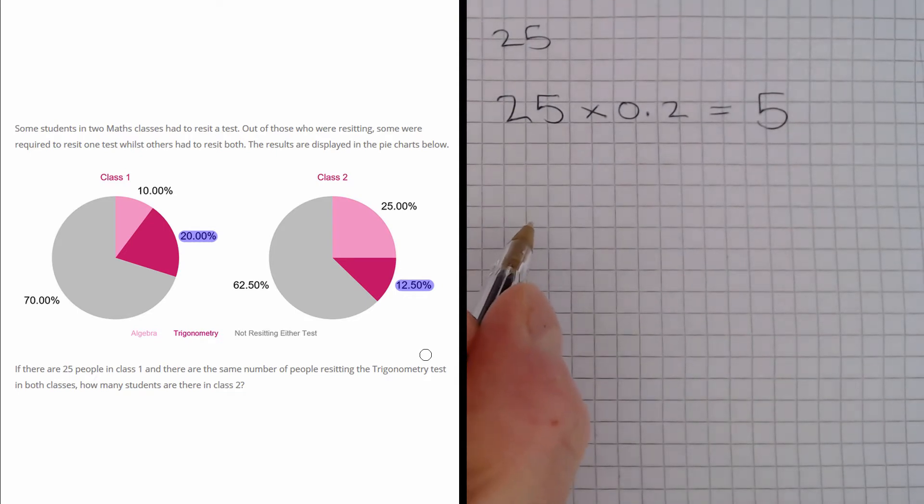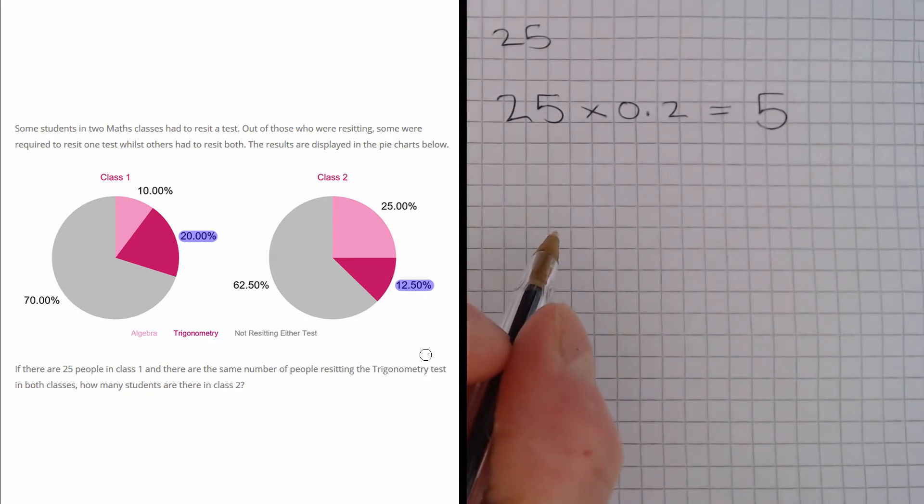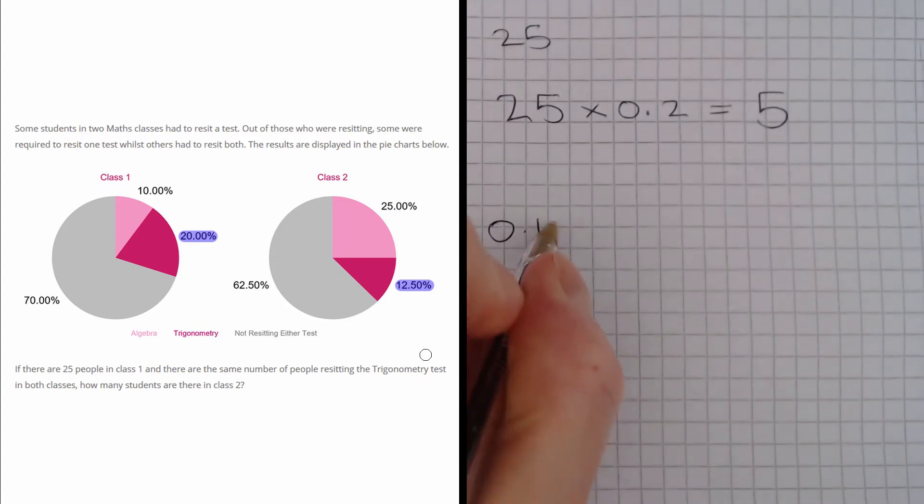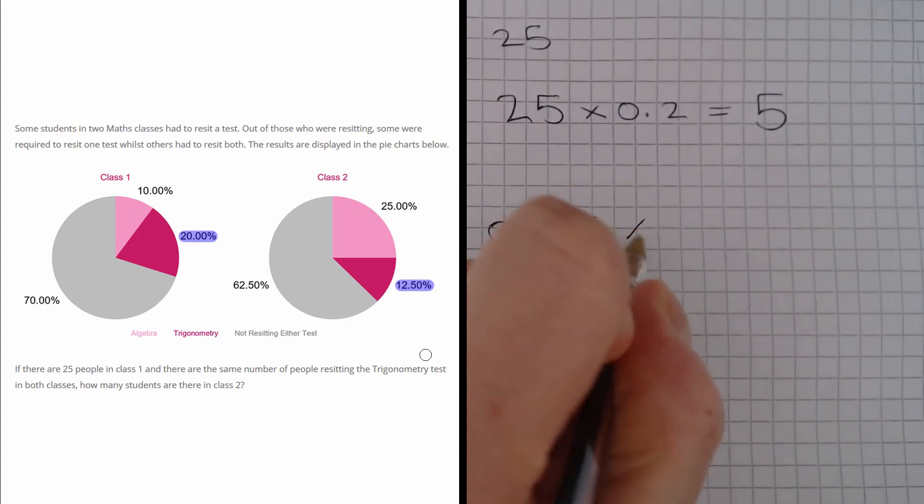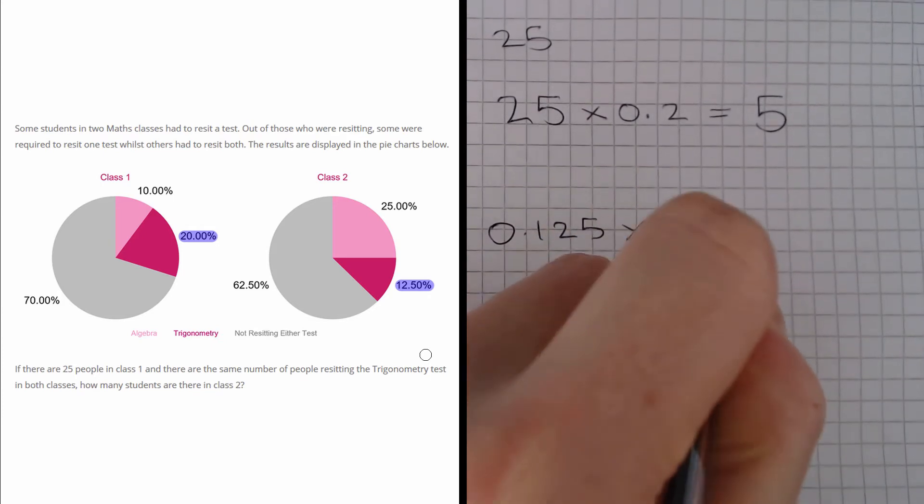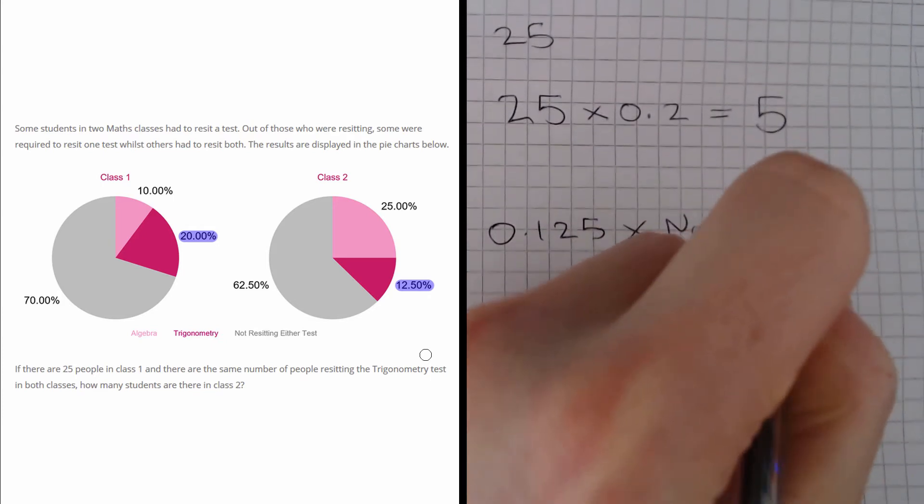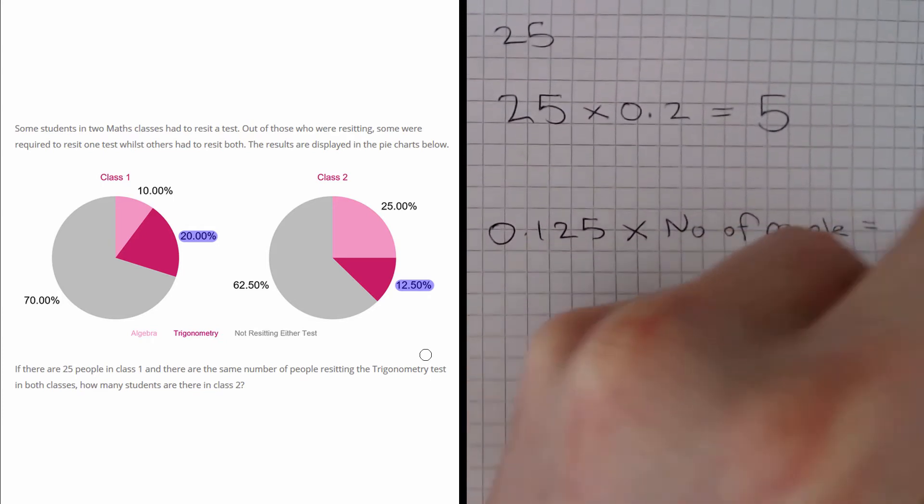And if we find 12.5% of a number, we multiply it by 0.125. So 0.125 multiplied by the number of people in class 2 gives us 5.